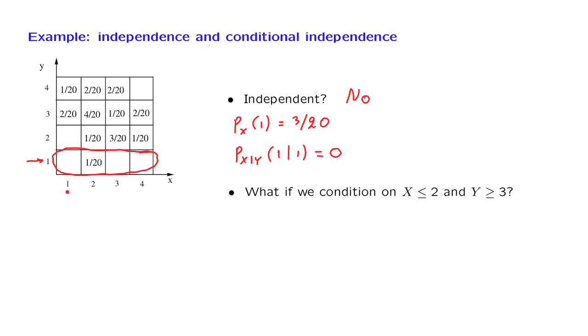So suppose, for example, that someone tells us that the outcome of the experiment was such that it belongs to this blue set. This is the set where x is less than or equal to 2, and y is larger than or equal to 3. So we are given this information. And this is now our new conditional model.